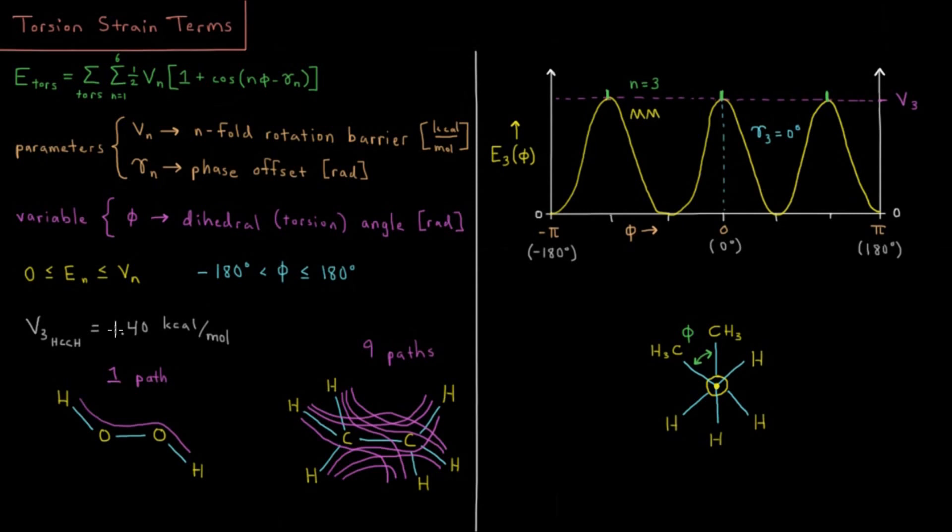So typically these values are somewhere between zero and 10 kcal per mole. Torsion barriers are usually much weaker than angle or bond terms. So 1.4 kcal per mole is the value for something like ethane, a typical HCCH torsion angle.